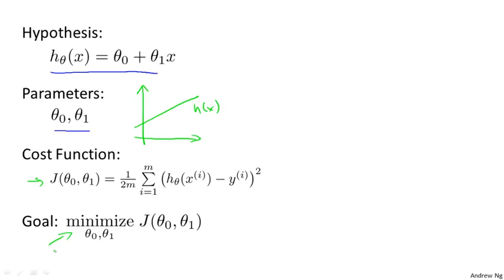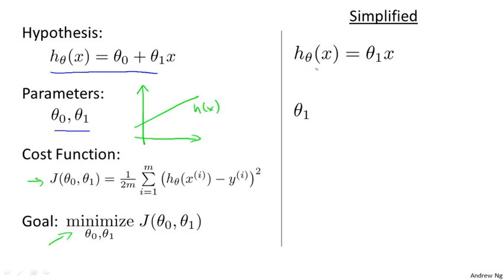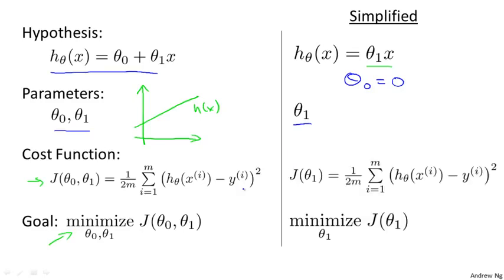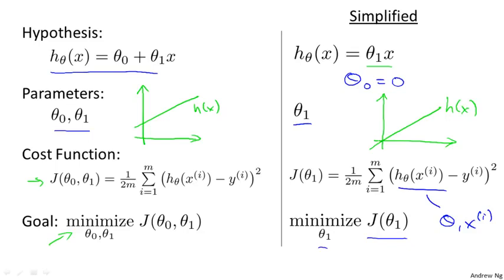For this video, in order to better visualize the cost function J, I'm going to work with a simplified hypothesis function. I'm going to use a simplified hypothesis which is just theta one times x. You can think of this as setting the parameter theta zero equal to zero. So I have only one parameter theta one, and my cost function is similar to before, except that now h of x is equal to just theta one times x. My optimization objective is to minimize J of theta one. In pictures, this means that if theta zero equals zero, that corresponds to choosing only hypothesis functions that pass through the origin.